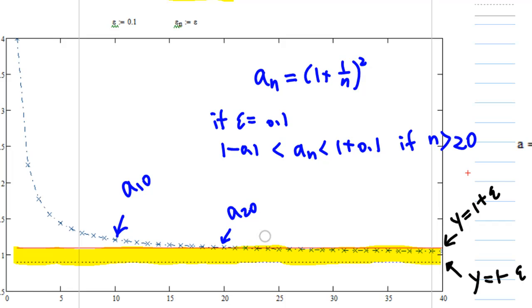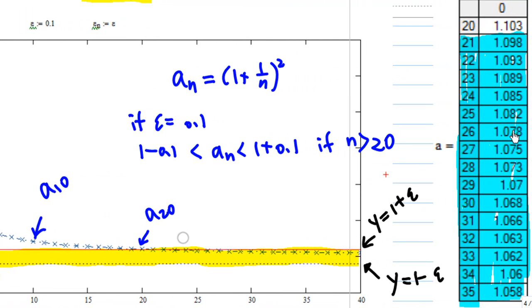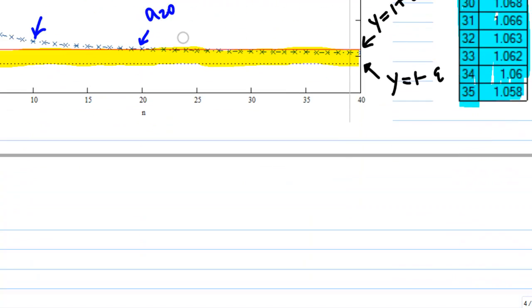We can verify this from the table of a_n. We can see that for n > 20, that means n = 21, 22, 23 onwards, all the a_n values are less than 1.1 and greater than 0.9. So this is how we visualize the definition of a convergence sequence.